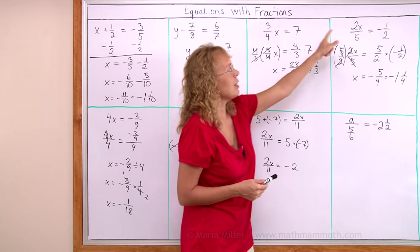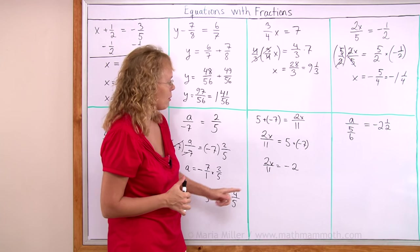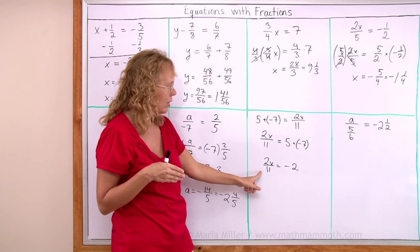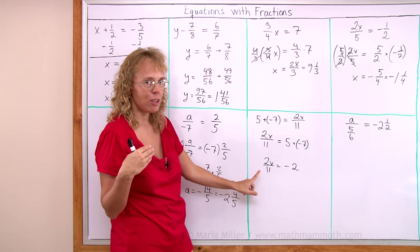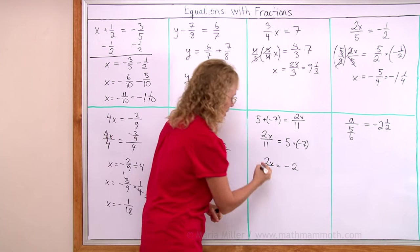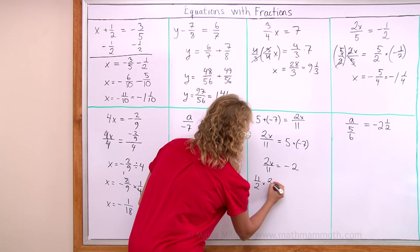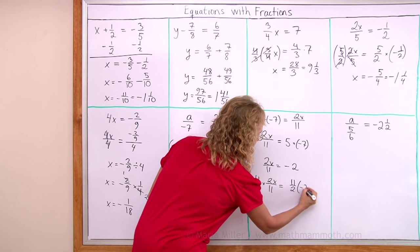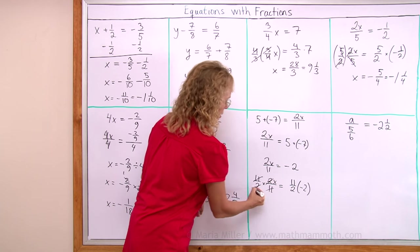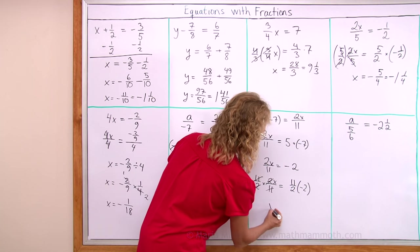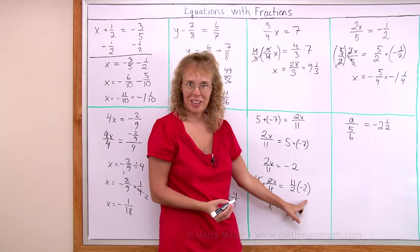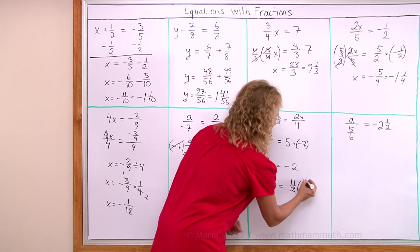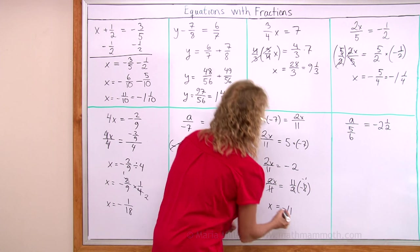Now it is exactly like we had before. We need to multiply so that these 2 elevenths here will cancel out. So we multiply by 11 over 2, 11 over 2 times 2x over 11. On this side 11 over 2 times negative 2. Those cancel, x is left alone. Over here 2 and 2 cancel too. There's the negative 1 there now, so we get negative 11, a whole number this time.